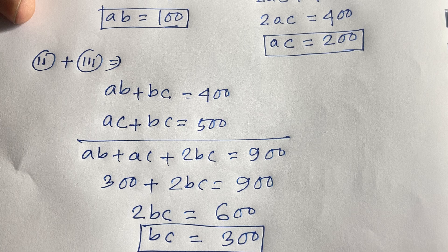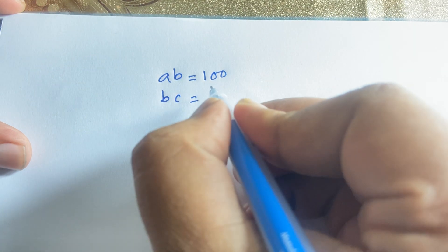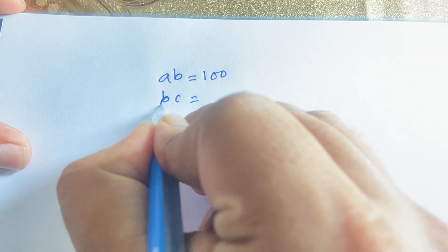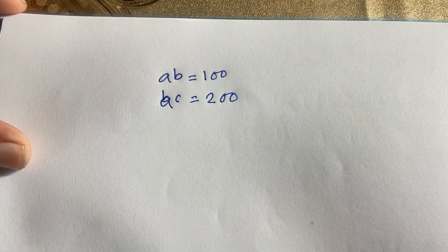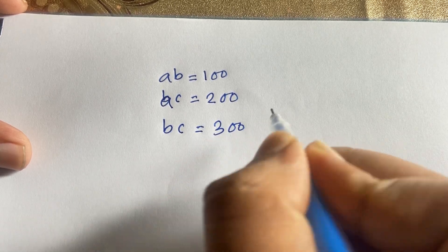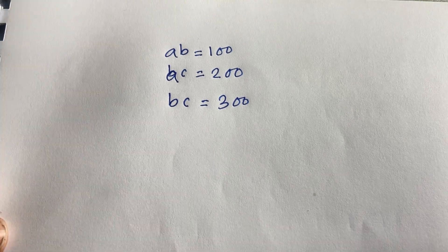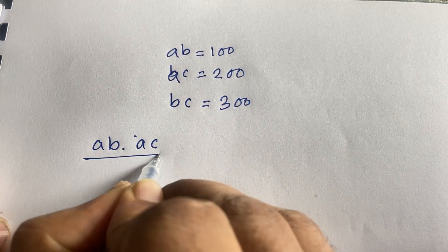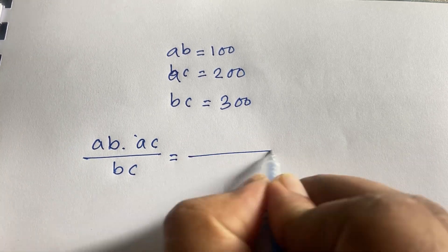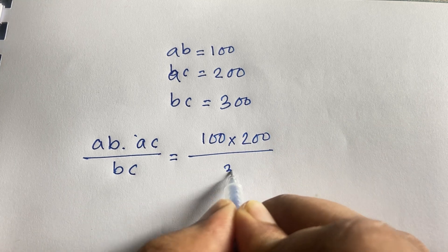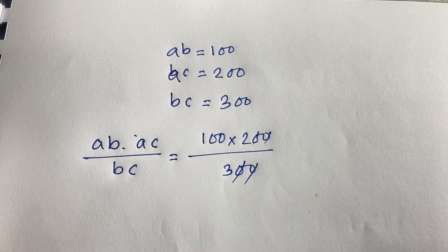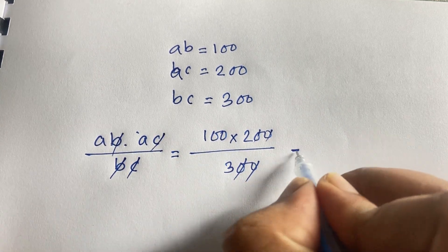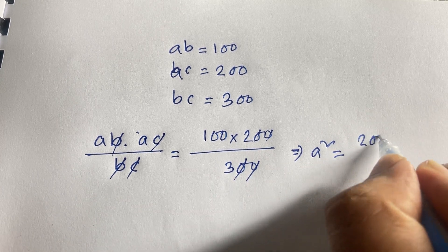Now we find the individual values. Multiplying ab times ac divided by bc: (100 times 200) divided by 300 equals 200/3. Since ab·ac/bc equals a², we get a² equals 200/3. Next, multiplying ab times bc divided by ac: (100 times 300) divided by 200 equals 150. Since ab·bc/ac equals b², we get b² equals 150.